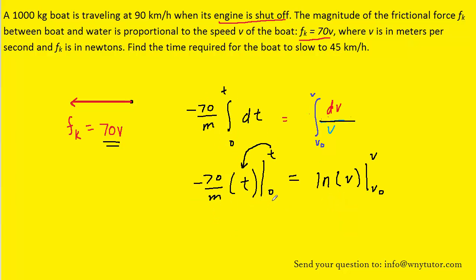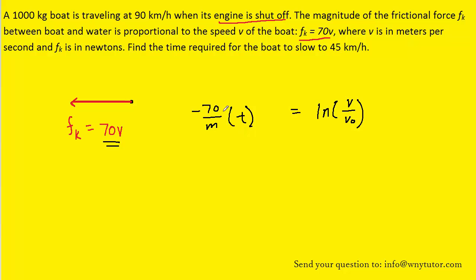When we plug the limits of integration in we would have the following result on the left side, and we can do the same thing on the right side. We'll simplify the t minus 0 term, and then recall that the difference between two natural logarithms can be written as the quotient of a single logarithm.